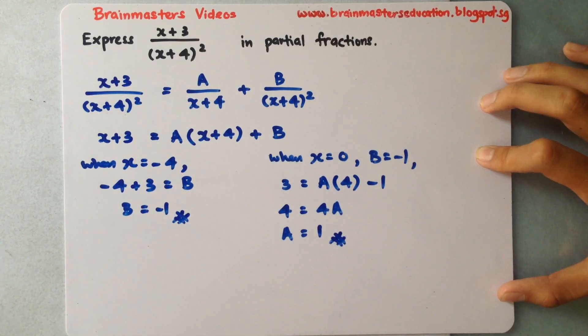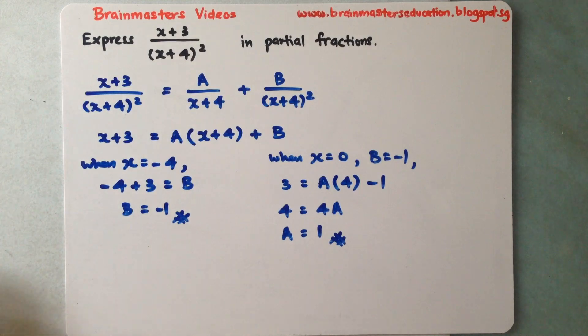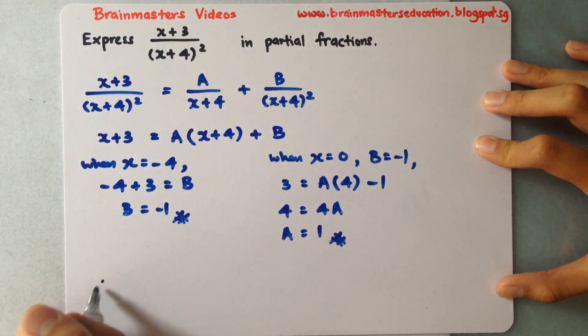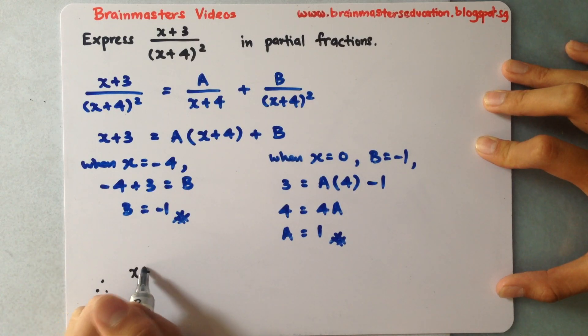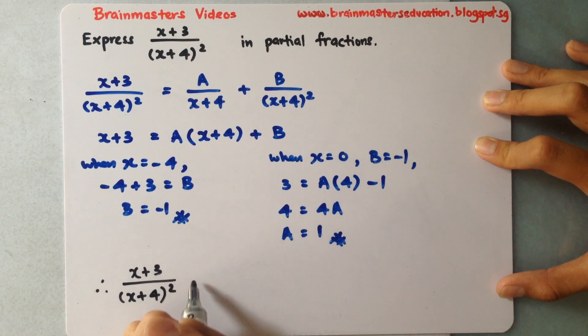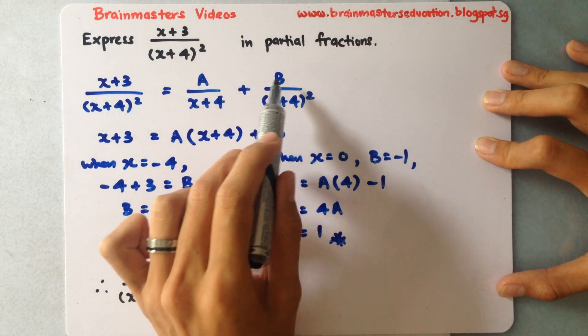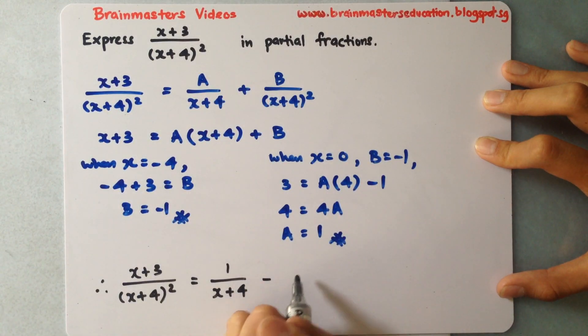Now I have these two values for my A and B, so the last part is to rewrite my A and B into my original partial fraction. Therefore, (x+3) over (x+4) whole thing square equals 1 over (x+4). Notice my B is negative 1, I can either write negative 1 here or bring the negative down, so I'll have negative 1 over (x+4) square. This is my final answer.